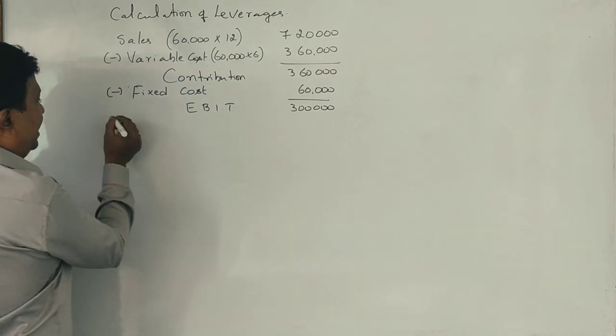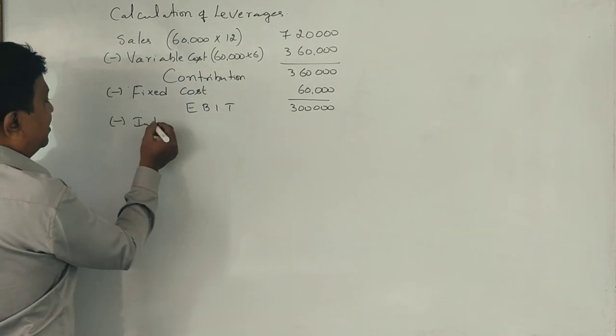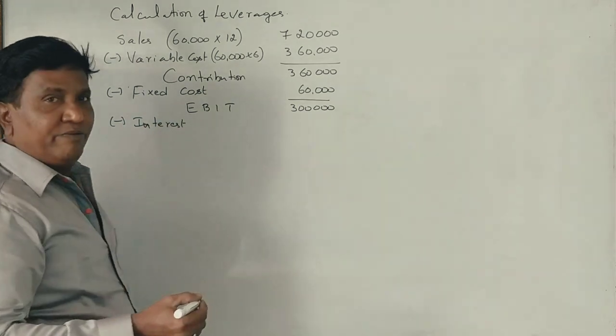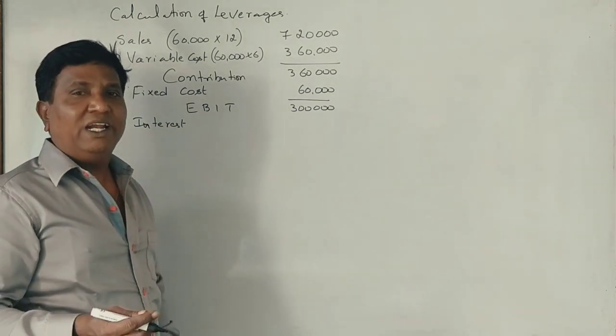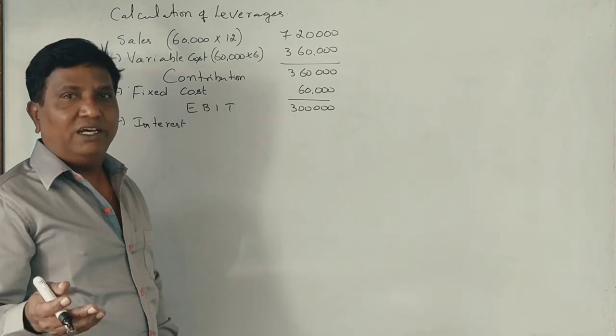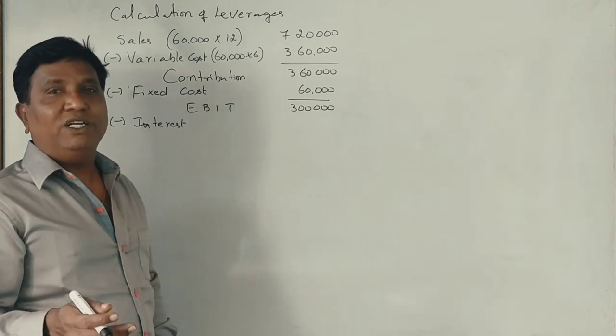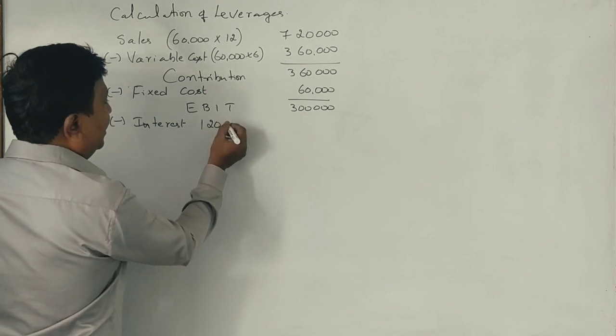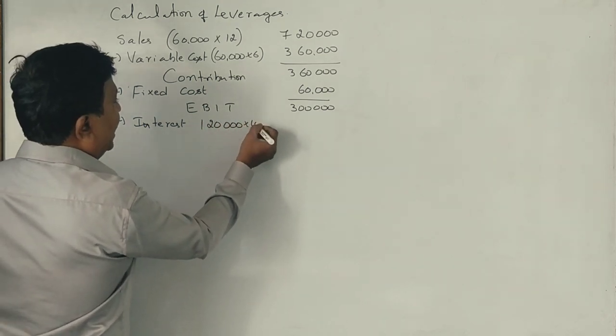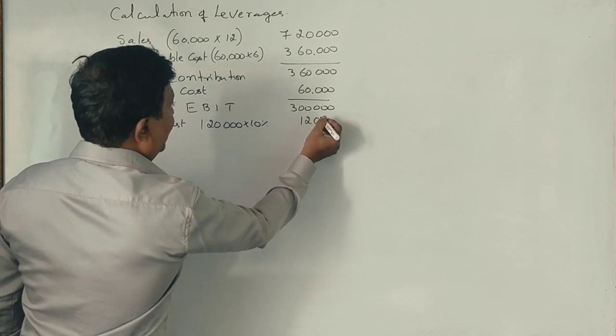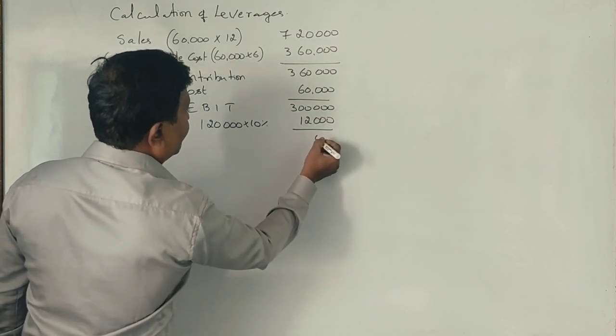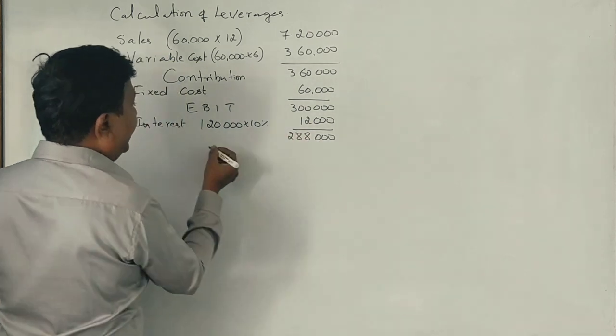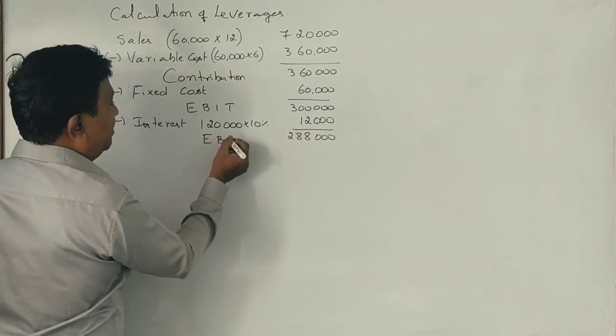From this EBIT, if you deduct interest. See, interest is not given directly. But what he is stating is 1,20,000 rupees of debt, loan we have taken, for which, what is the rate of interest? 10 percent. On 1,20,000 rupees, if you calculate 10 percent, it comes to 12,000 rupees. So, 2,88,000 is the EBT.